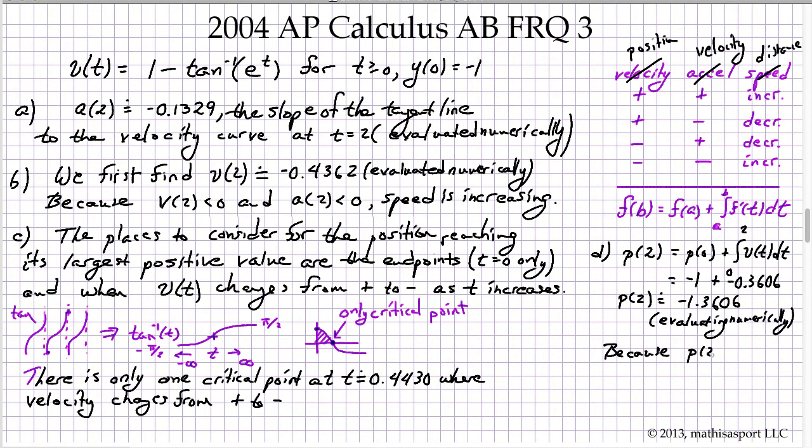P of 2 is less than 0, and V of 2 is less than 0, particle is moving away from the origin.